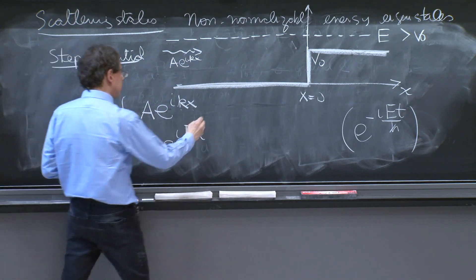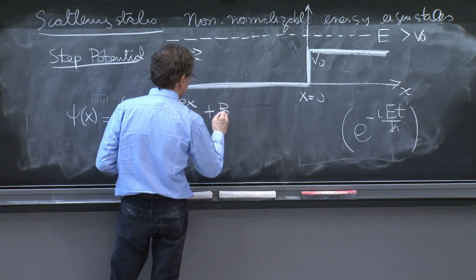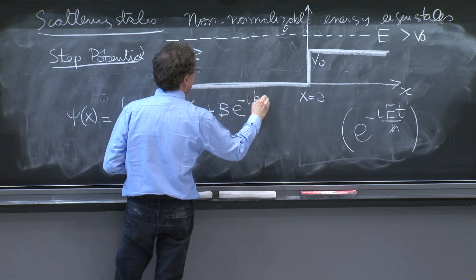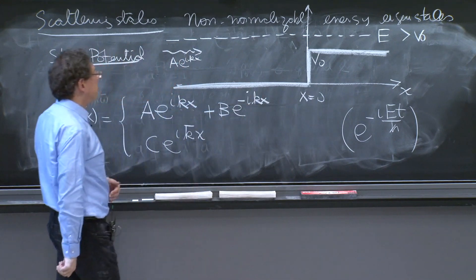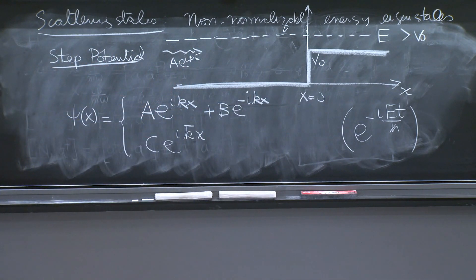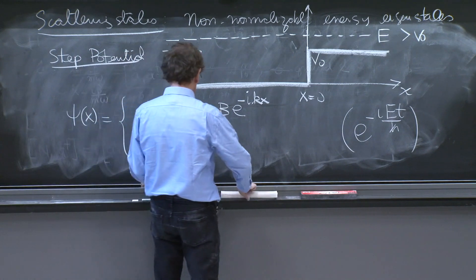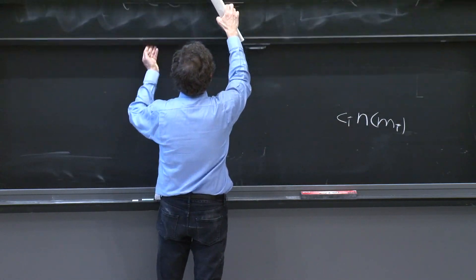So I will put a b e to the minus i k x. That's a wave moving towards the left with an unknown coefficient. And now, let's get those constants.